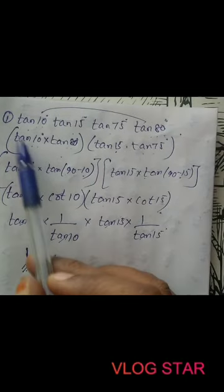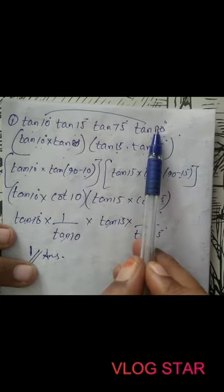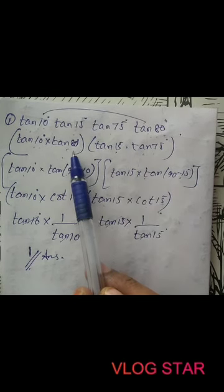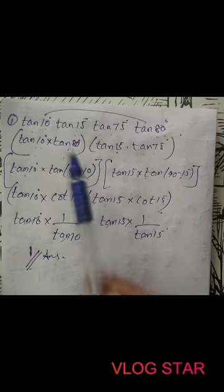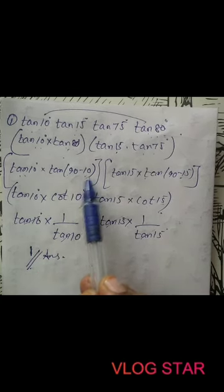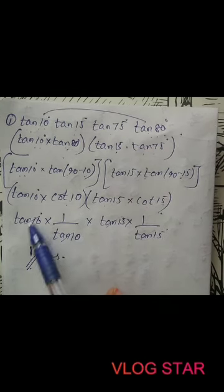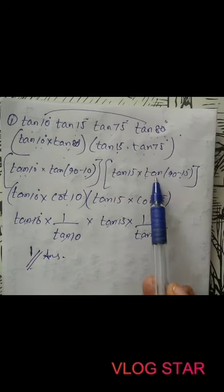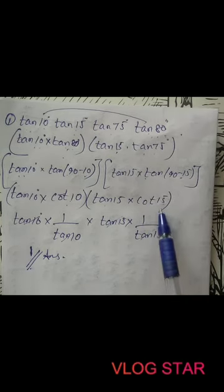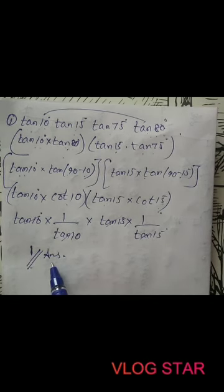To repeat: given the product of four tan terms, we group complementary pairs — tan(10°) with tan(80°), and tan(15°) with tan(75°). We rewrite the bigger angle as 90° minus the smaller angle, apply tan(90° − θ) = cot(θ), and since cot is the reciprocal of tan, all trig functions cancel, giving 1.